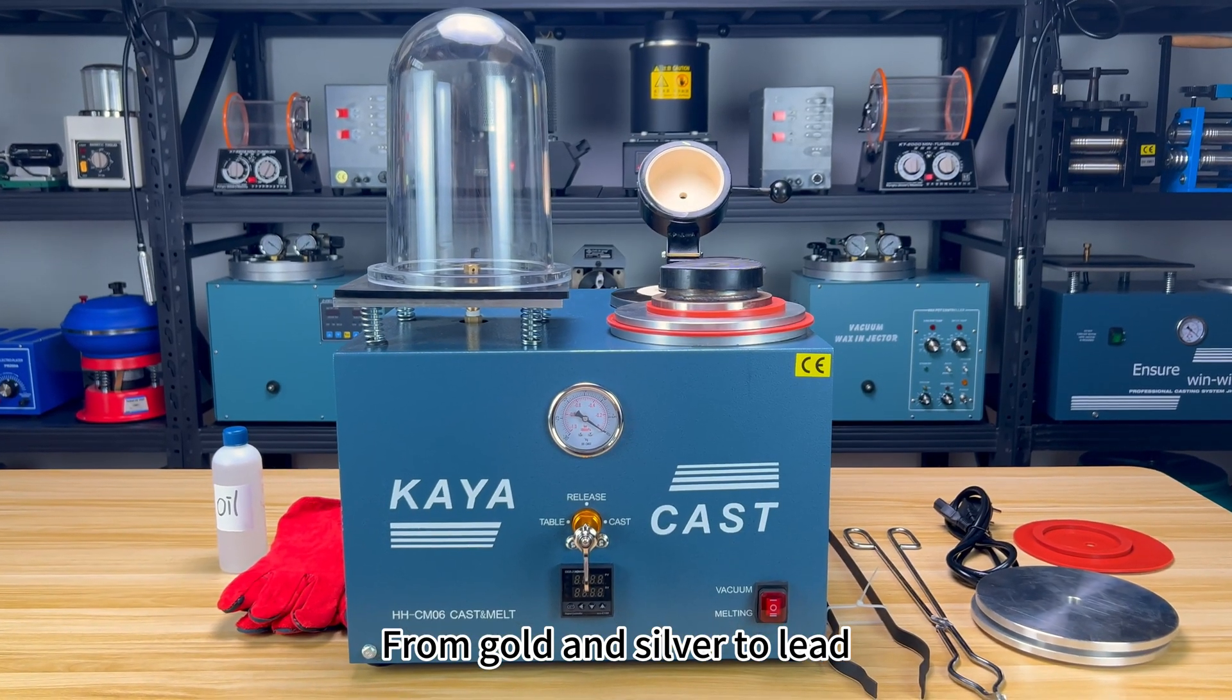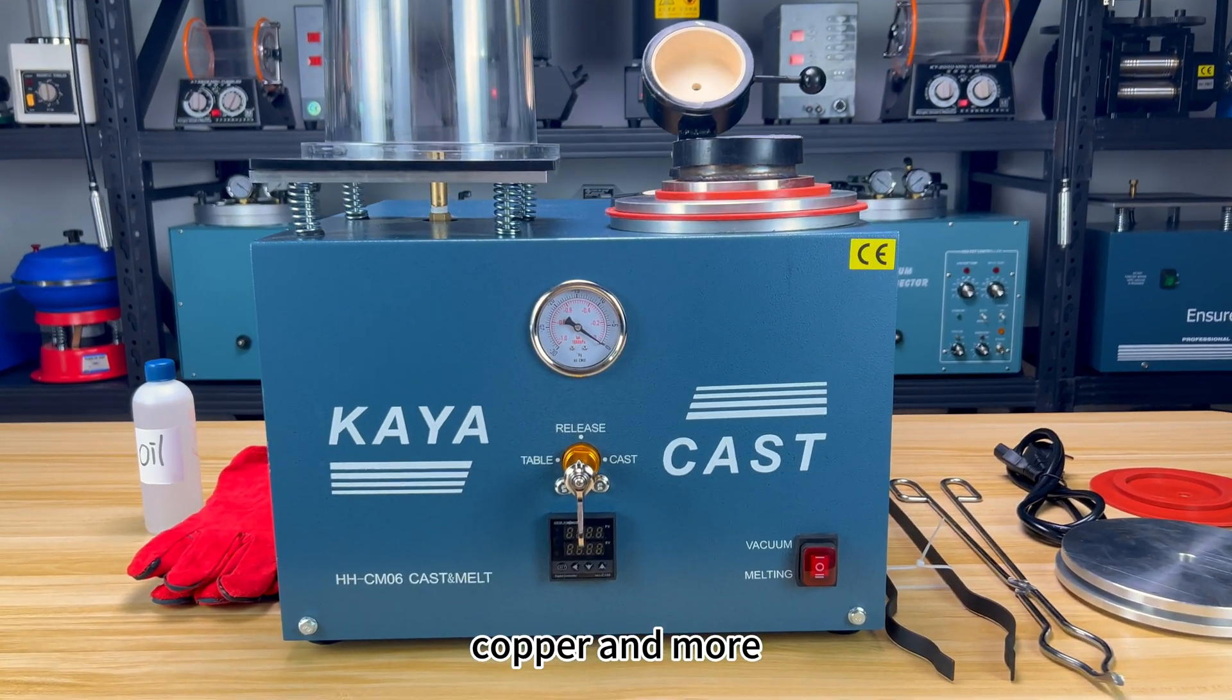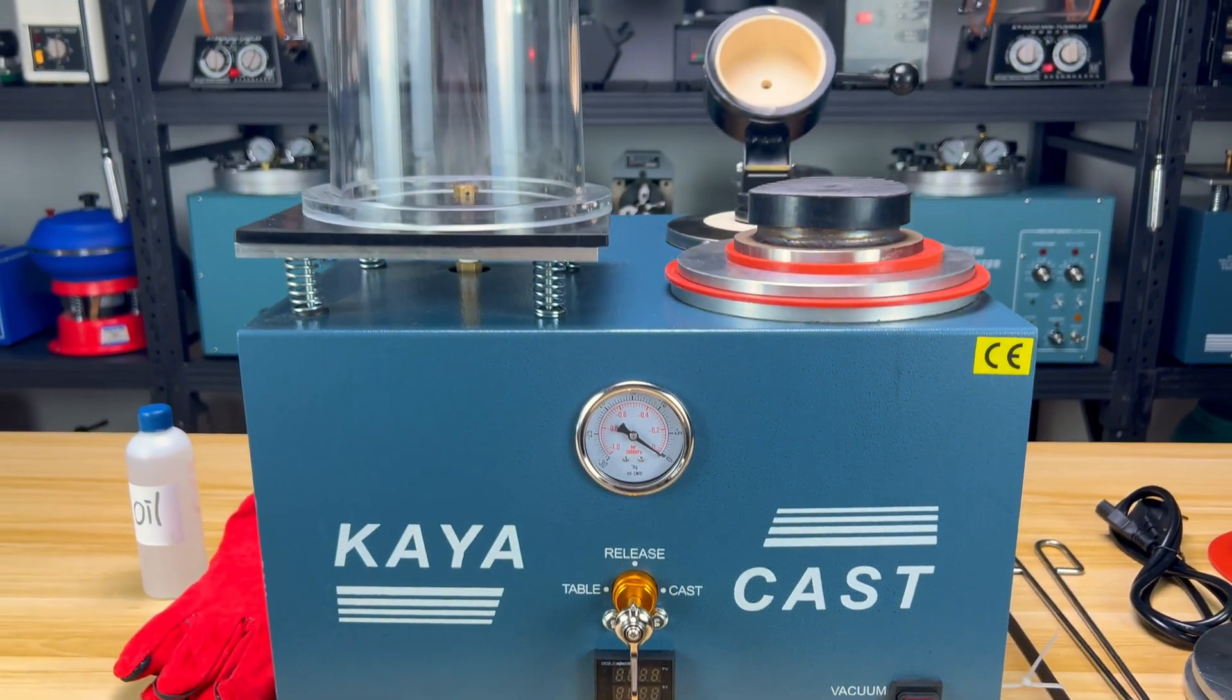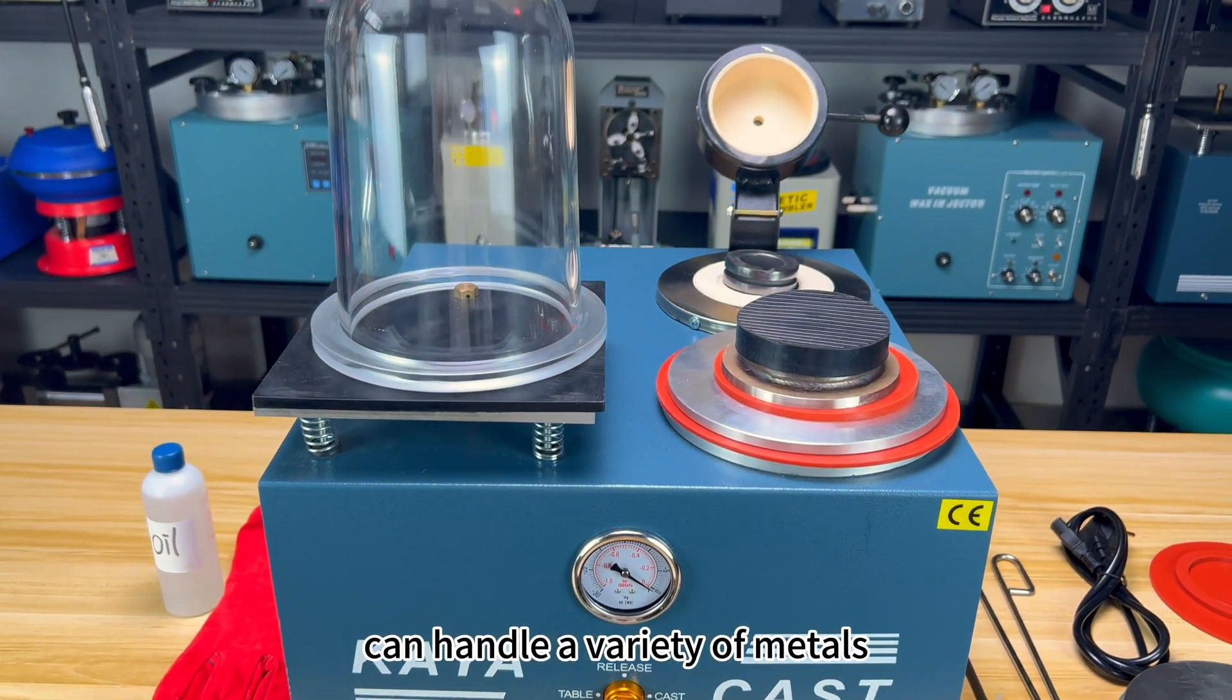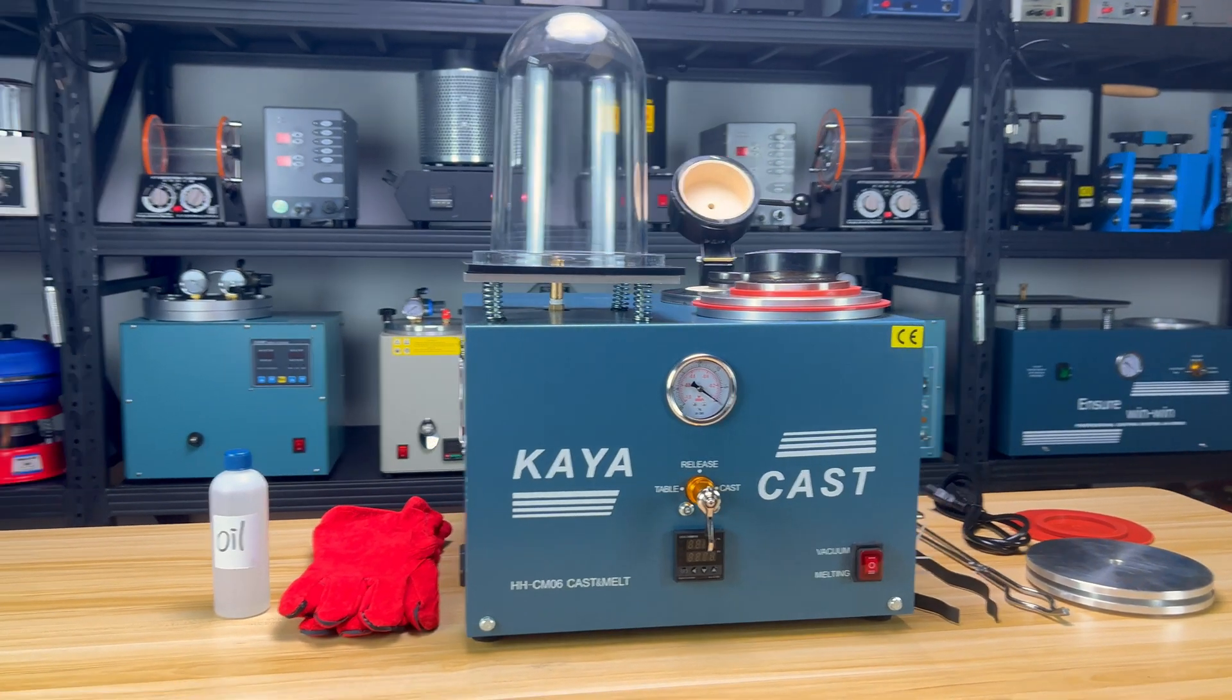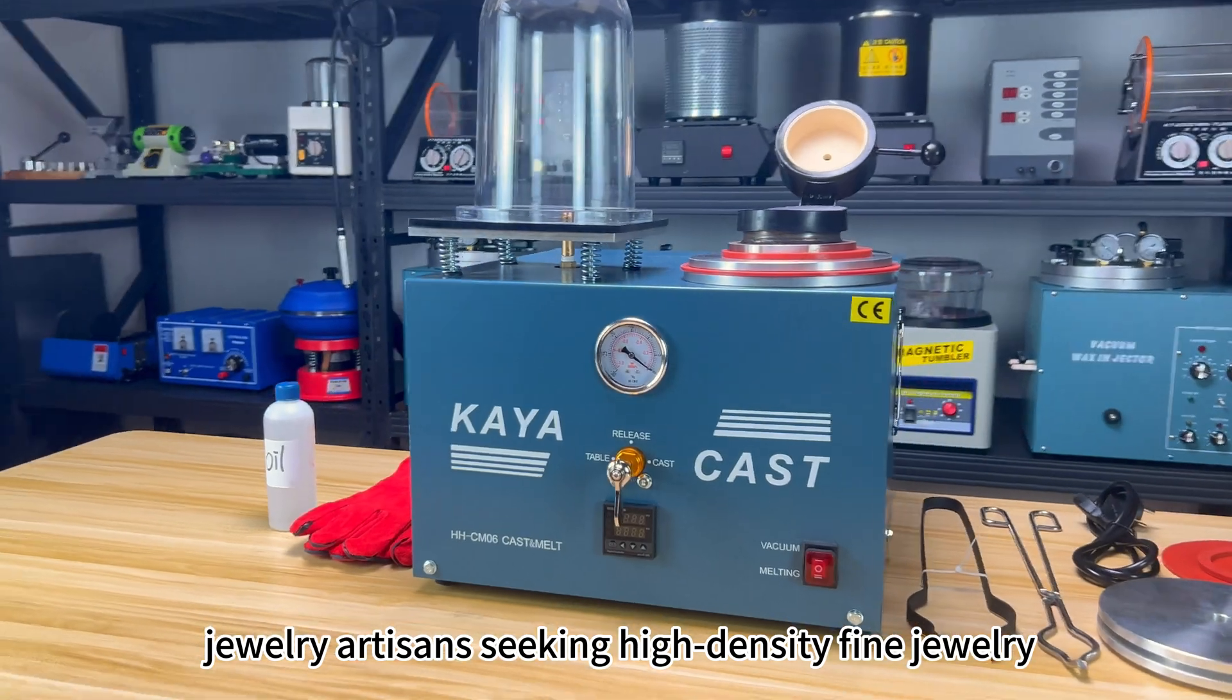From gold and silver to lead, copper and more, the Kaya Cast jewelry casting machine can handle a variety of metals, making it the perfect companion for jewelry artisans to create high-density fine jewelry.